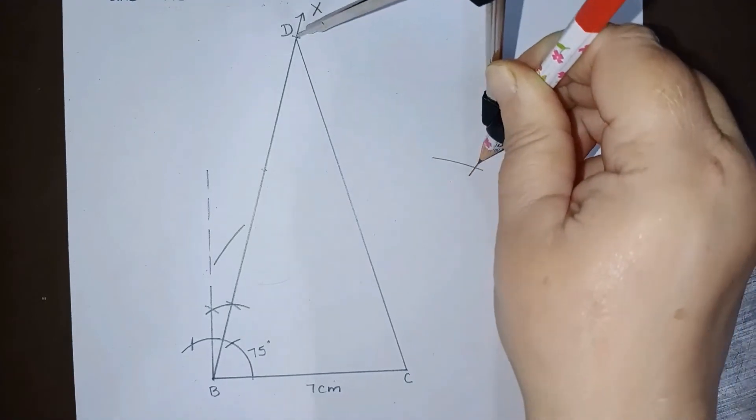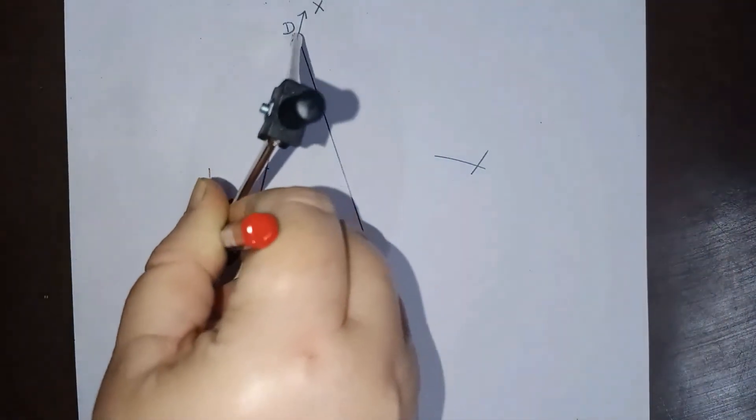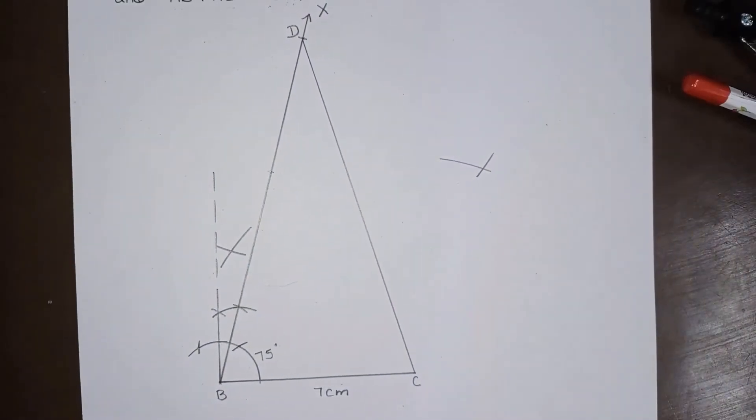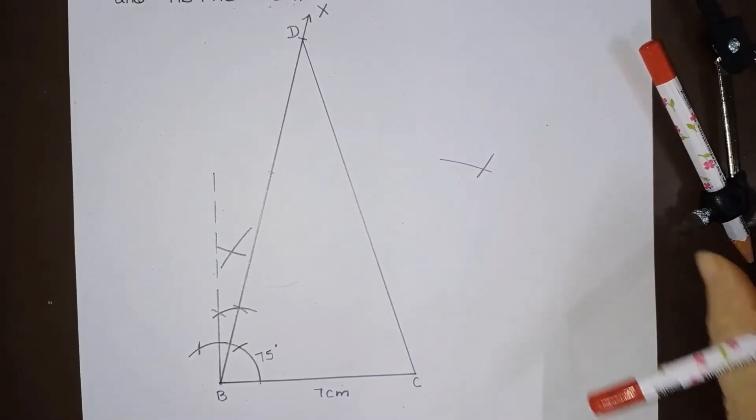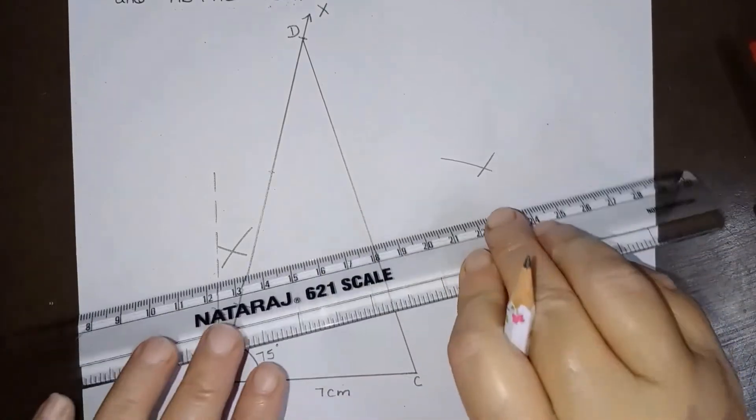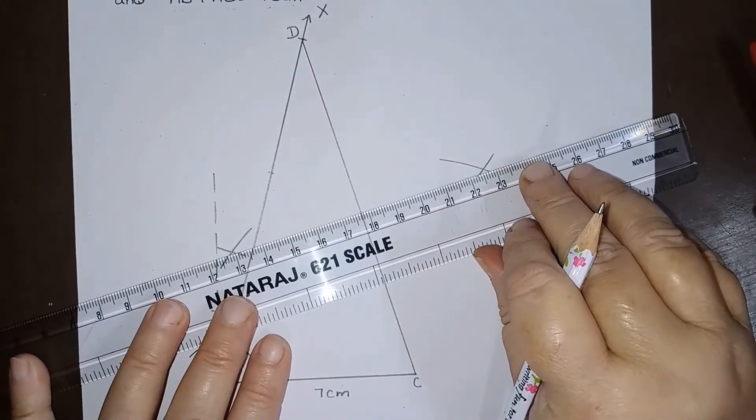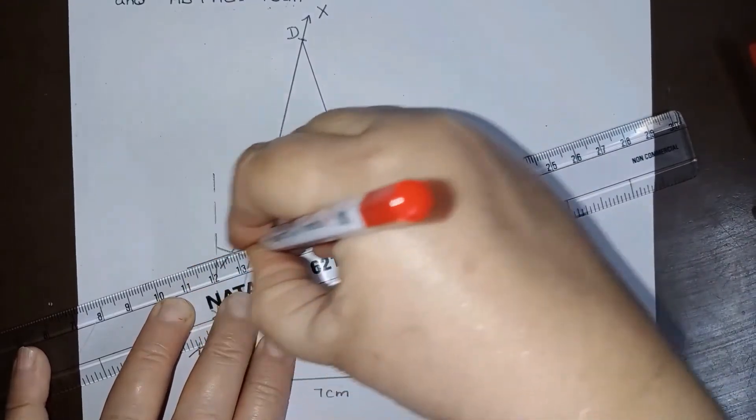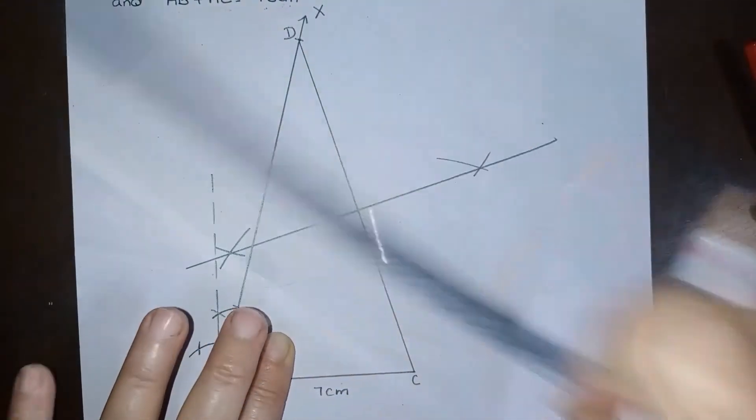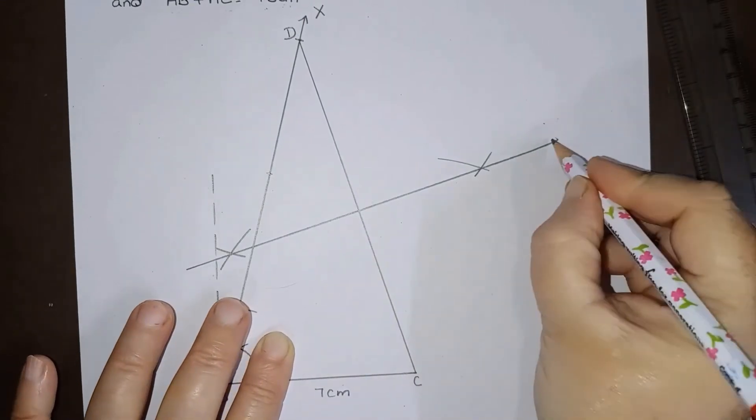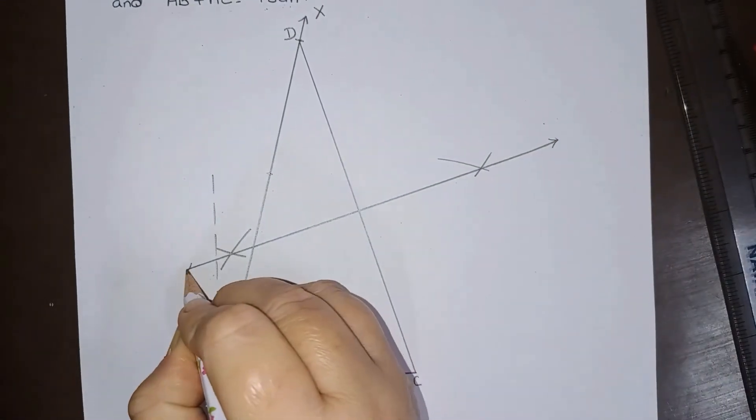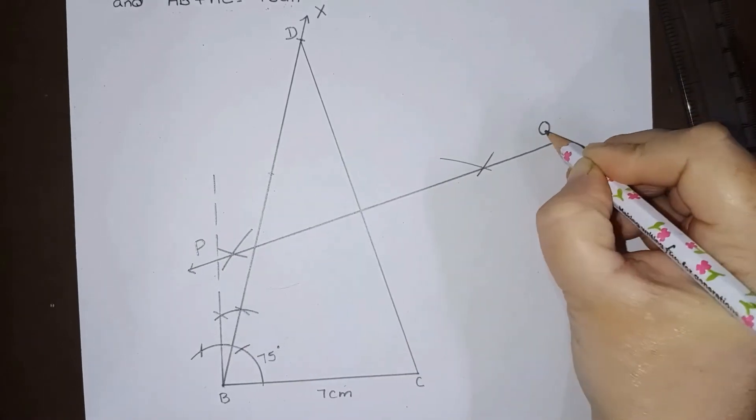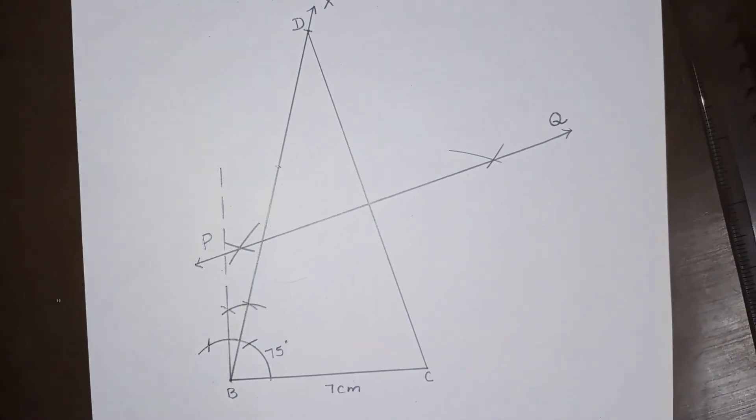So this is two arcs cutting the previous arcs. So when we will join them we will get perpendicular bisector of CD. So they are joined like this. So this is the perpendicular bisector of CD. Let us give this perpendicular bisector, let this perpendicular bisector be PQ. So this is perpendicular bisector PQ.